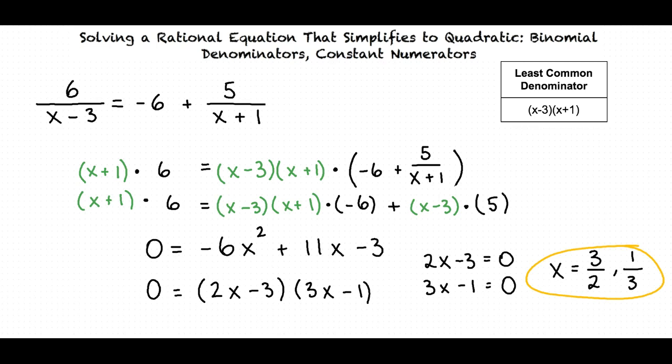Okay, so in order to solve a rational equation that simplifies to a quadratic, I must first identify the least common denominator. Then, I multiply both sides of the equation by the least common denominator and cancel the denominators of the fractions. From here, I distribute until I have a quadratic expression equal to 0. Finally, I factor and solve for the given variable, and then I have my final answer.